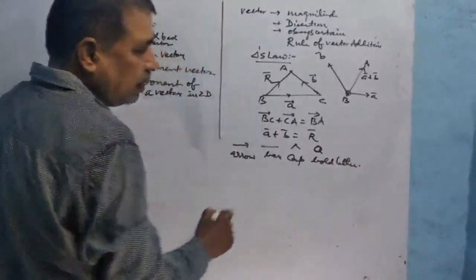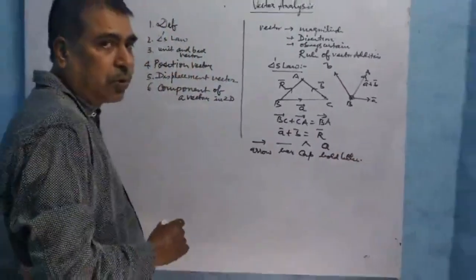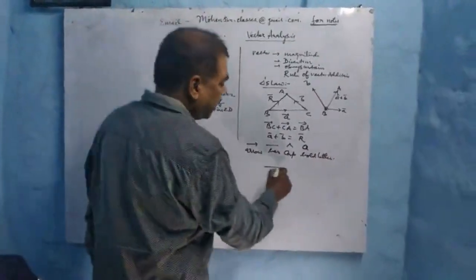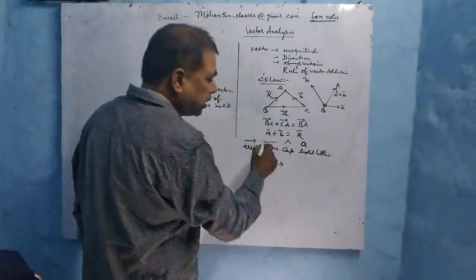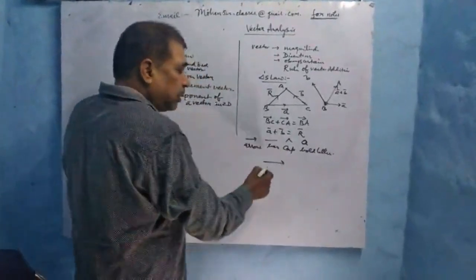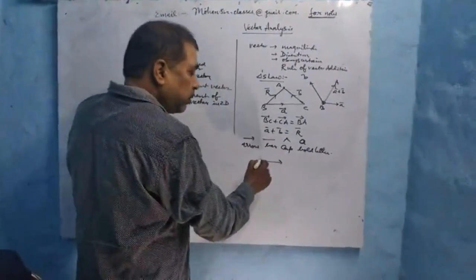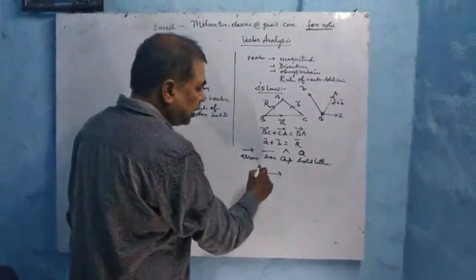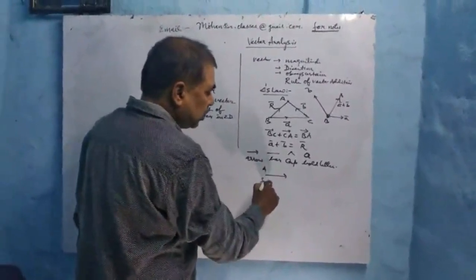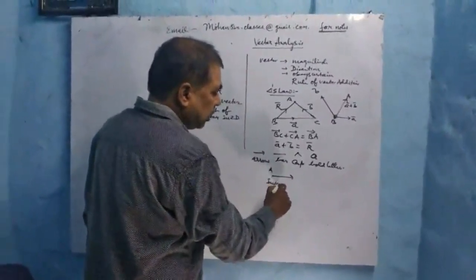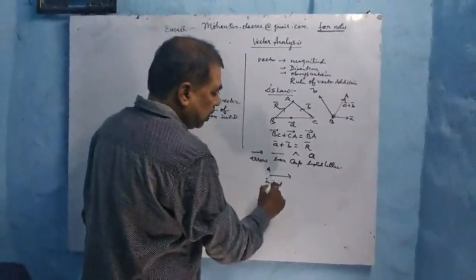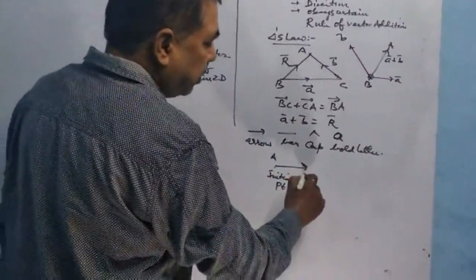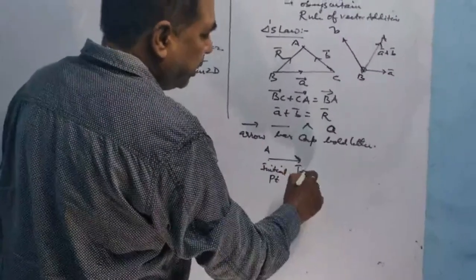Here we represent the vector in a triangle form, or generally with a bar. The initial point is where the vector starts from point A, and the arrow point is called the terminal point.